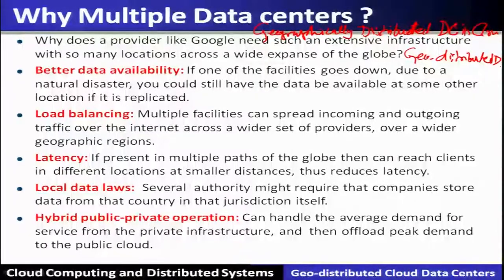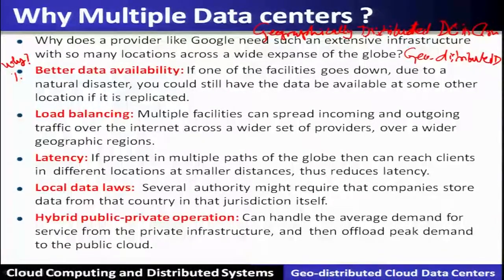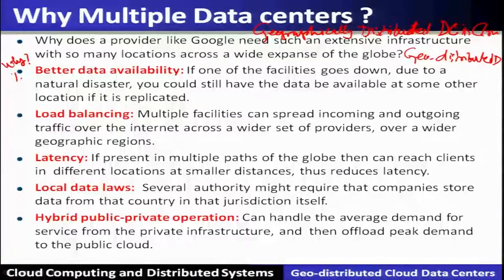The first reason for having geographically distributed data centers is to provide data availability. If one data center facility goes down due to calamities such as an earthquake, you will continue to get access to the data if it is replicated at another location. So having more than one geographic location — one of which may be active at that point of time — ensures data availability.